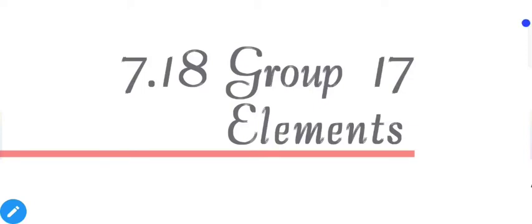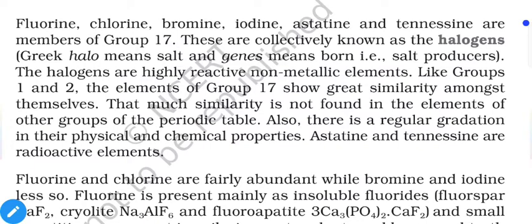Hello students, welcome. Today we are going to discuss Group 17 elements. In this group we have fluorine, chlorine, bromine, iodine, astatine, and tennessine. These are collectively known as halogens.